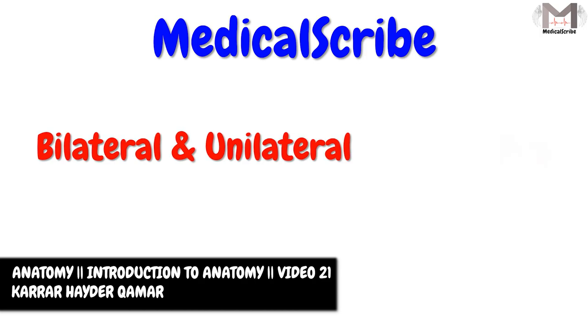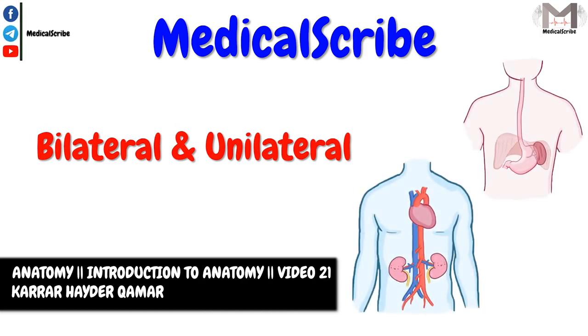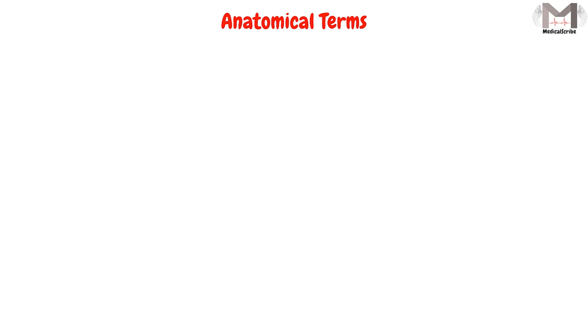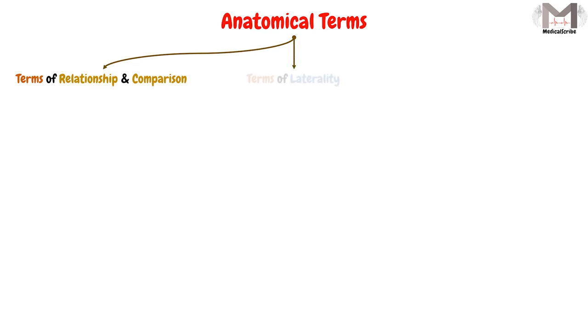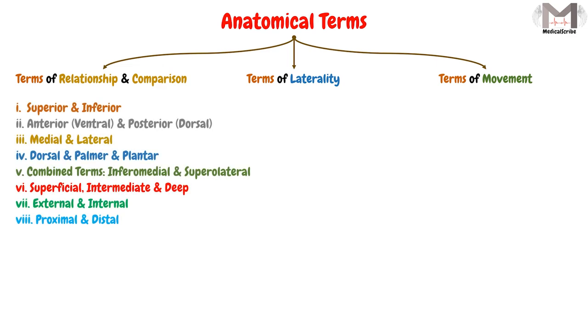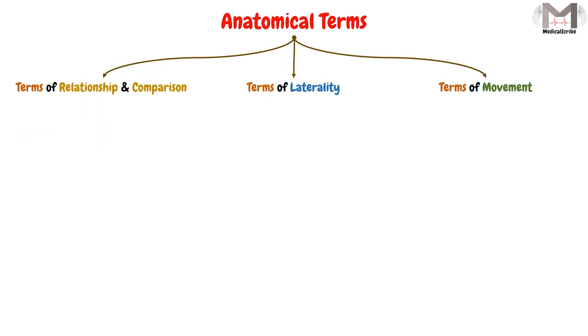Hi guys and welcome back in Medical Subscribe. In this video, we will talk about the bilateral and the unilateral terms. In the previous videos, we categorized the anatomical terms to three main types, which are the terms of relationship and comparison, the terms of laterality, and the terms of movement. We finished the first type in the previous videos. Today, we will talk about the second type, which is the terms of laterality.